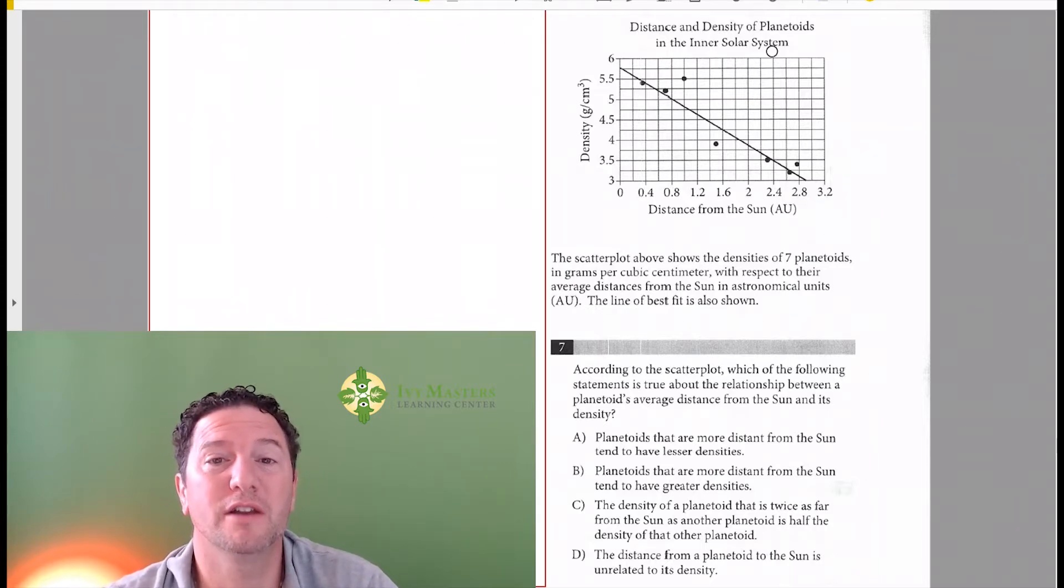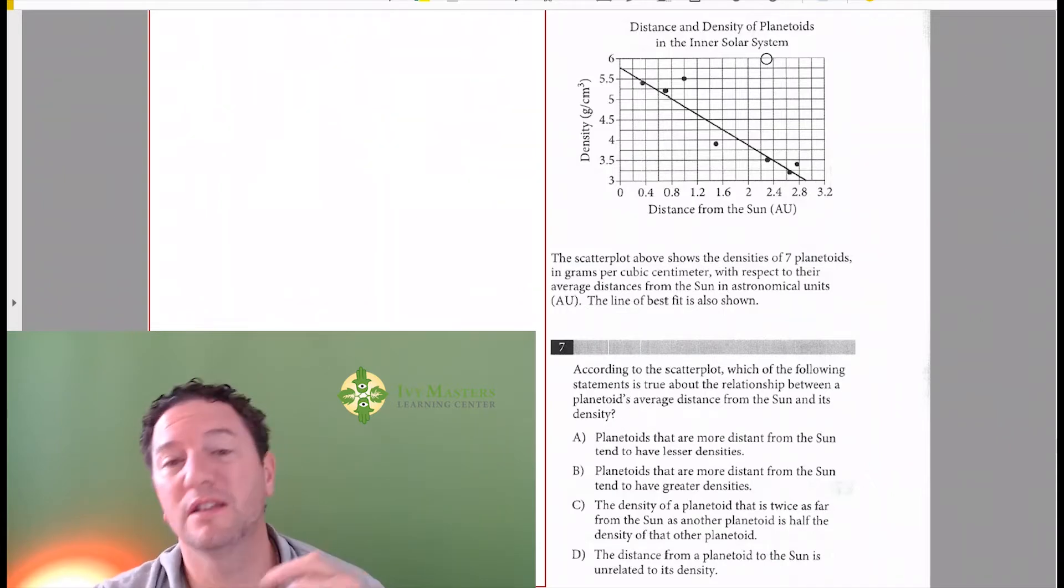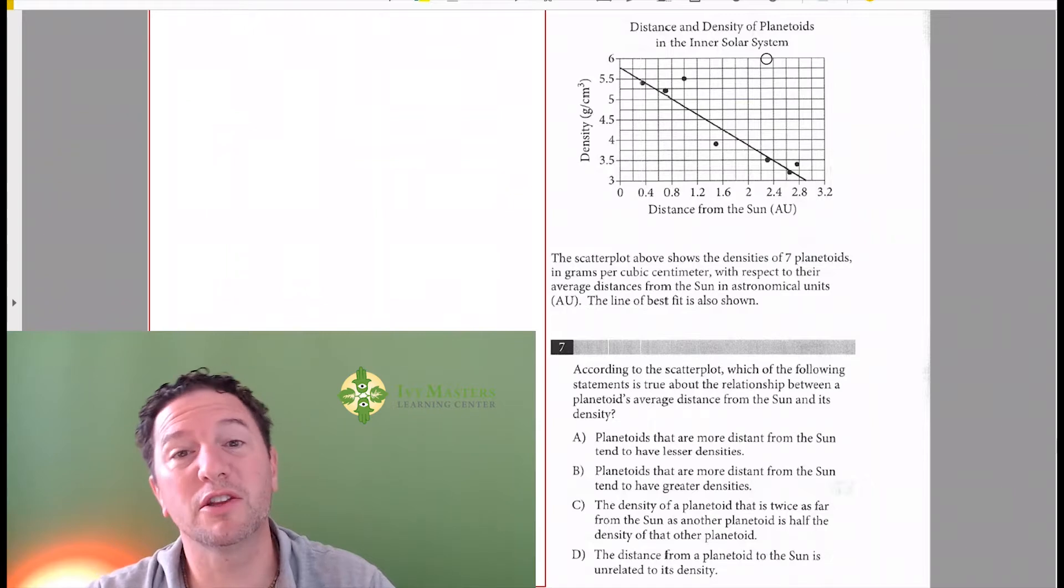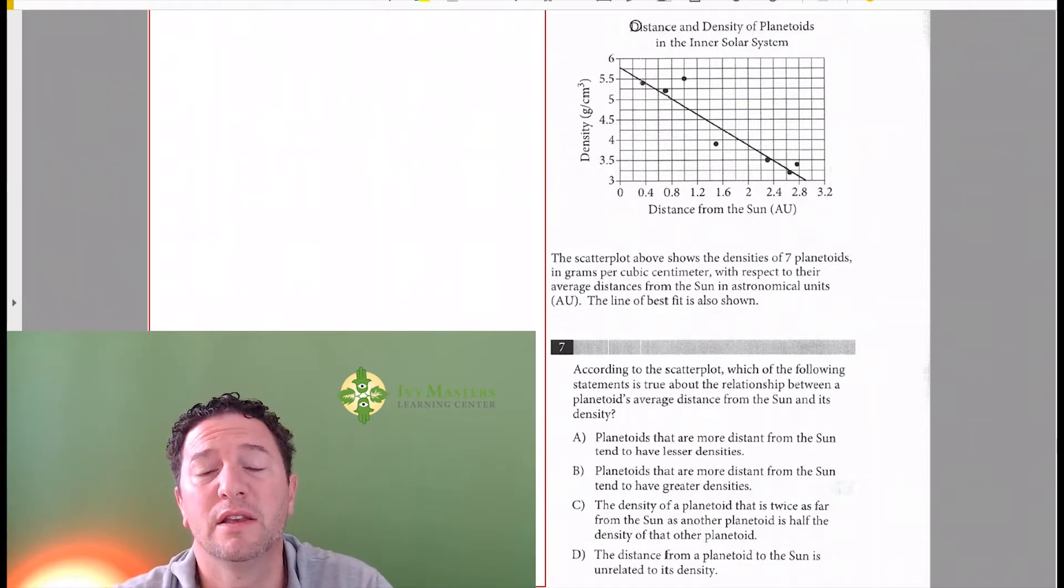So let's look at the title, let it register. Look at the x-axis, let it register. Look at the y-axis, let it register. Look at the trend, let that register also. The title is Distance and Density of Planetoids in the Inner Solar System. X-axis is distance from the sun, y-axis is density.